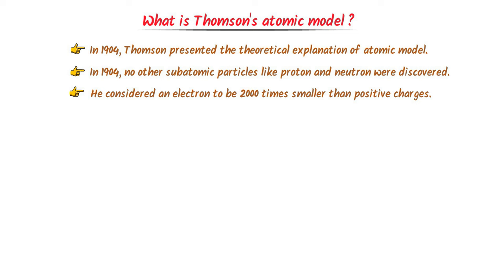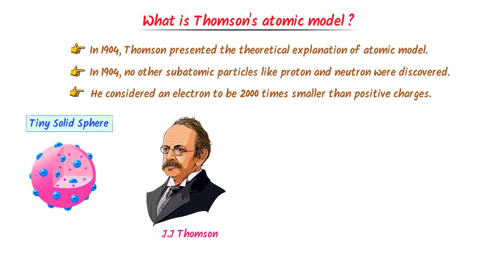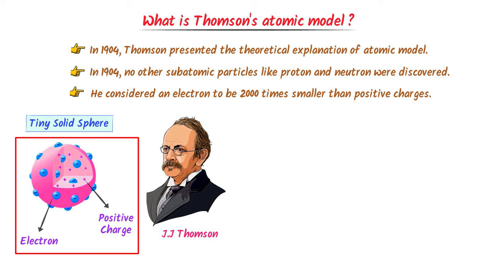Thomson's atomic model states that an atom is a tiny solid sphere — like a ball. Inside this sphere, or atom, there is a cloud of positive and negative charge. Thomson's model states that this sphere contains a spherical cloud of positive charge and negative charge.